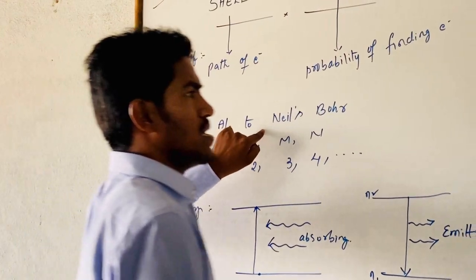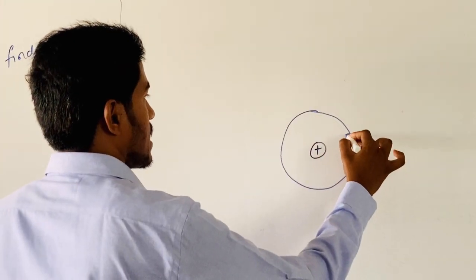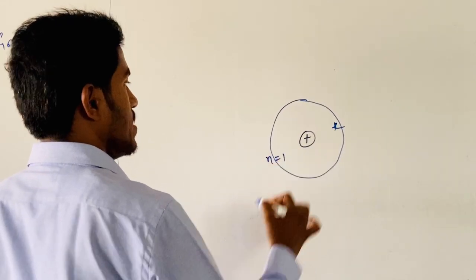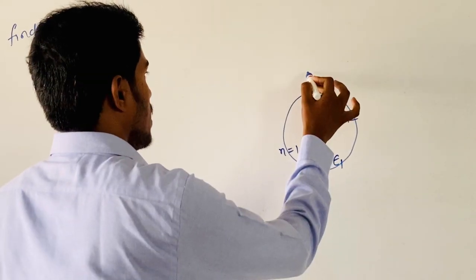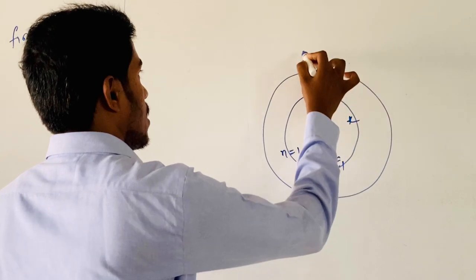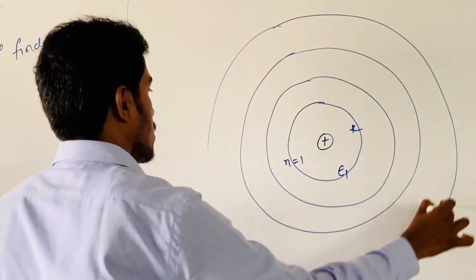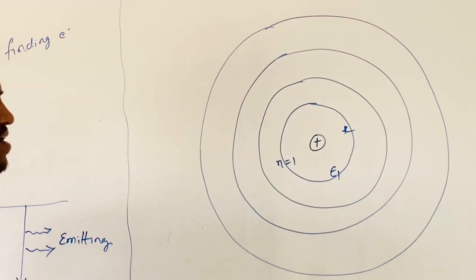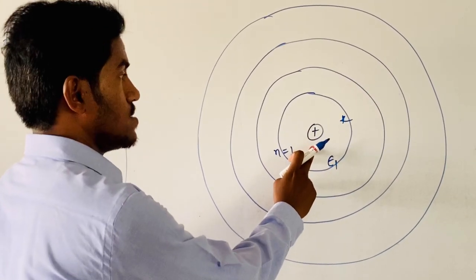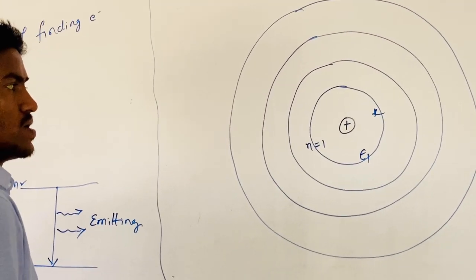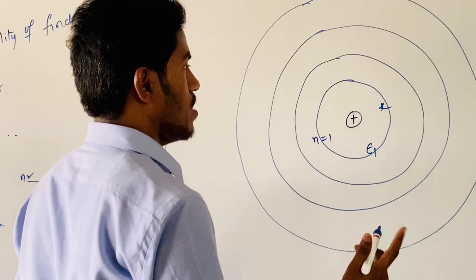According to Niels Bohr, the K shell is very near to the nucleus and is numbered as 1. Similarly, L, M, and N follow. The n-value may vary from 1 to infinity. If n equals 0, the region is known as the nucleus. When the probability of finding an electron is maximum, that region is known as an orbital or subshell.